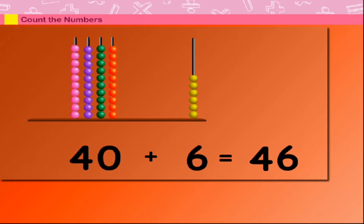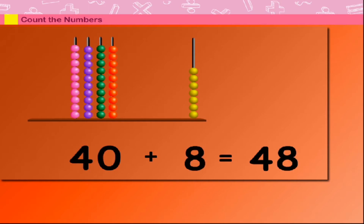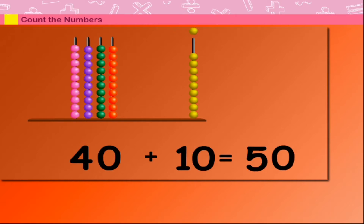40 plus 6 is equal to 46. 40 plus 7 is equal to 47. 40 plus 8 is equal to 48. 40 plus 9 is equal to 49. And 40 plus 10 is equal to 50.